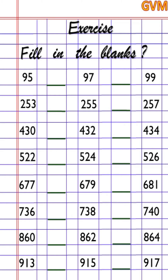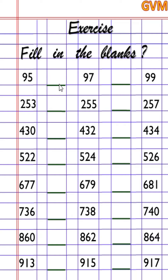Today's exercise is fill in the blanks. We will solve it now. The first set is 95, blank, 97, blank, 99. Between 95 and 97 the missing number is 96. You have to write 96 in the center of the box — that is the right answer. Then between 97 and 99 the missing number is 98. Write 98 in the blank.